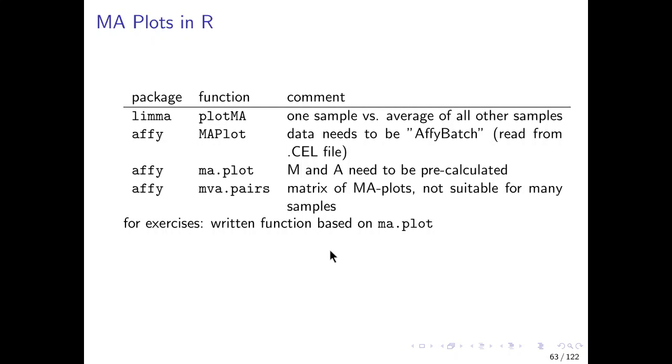To visualize the data before and after normalization you can use the MA plots that are also used by the LOESS normalization internally. And there are different functions in R in the packages limma and affy that can create these MA plots but they all have some disadvantages. So the plotMA function in limma basically represents what is done in the fast cyclic LOESS approach that you have always one sample versus the average of all other samples. But usually it makes more sense to look really at all combinations of samples, to maybe see if there are two samples that don't fit to each other after the normalization, for example.